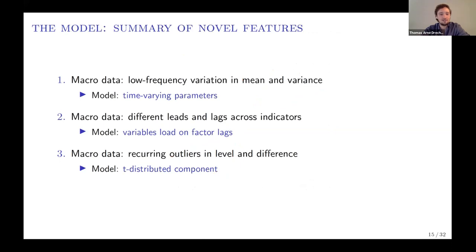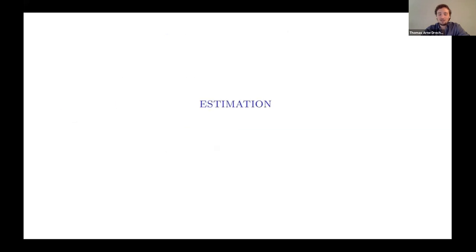To summarize, we have low frequency variation in the mean and variance captured by time-varying intercepts and stochastic volatilities; lead-lag dynamics captured by flexible polynomial loadings in the measurement equation; and recurring outliers captured by the T-distributed component. I will now explain how we estimate the model and select the data, and then move to the out-of-sample evaluation.